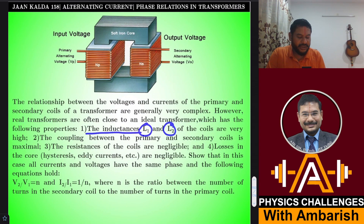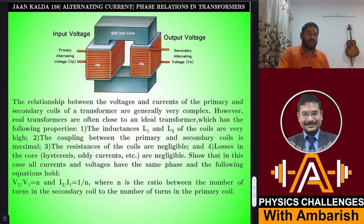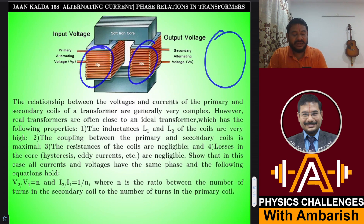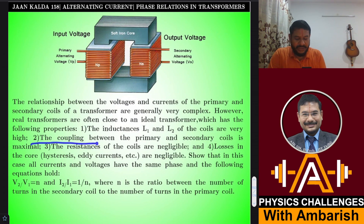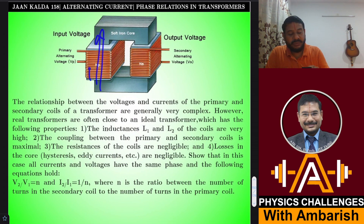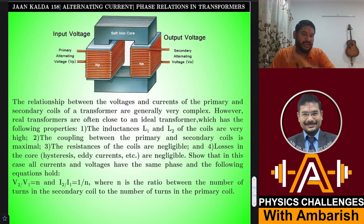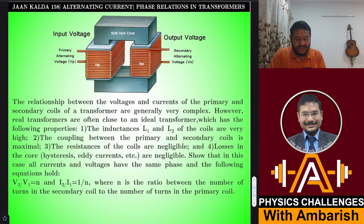Property one: the inductances L1 and L2 of the coils are very high — high relative to the load impedance Z connected across the secondary. Property two: the coupling between the primary and secondary coils is maximal, meaning every field line crossing the primary is also shared with the secondary, so every field line passes through every turn of the secondary. Flux leakage is negligible — perfect flux linkage — so whatever flux passes through the primary, the same flux per turn passes through the secondary.